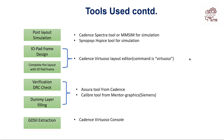IO pad frame design and completing the layout with IO pad frame — these two steps can again be done in Virtuoso Layout Editor. Verification, DRC check, and dummy layer fill can again be done using Calibre tool from Mentor Graphics or the Assura tool from Cadence. Finally, GDS2 extraction can be done using the Cadence Virtuoso console window.